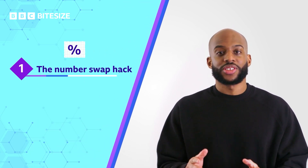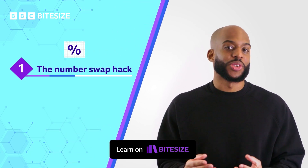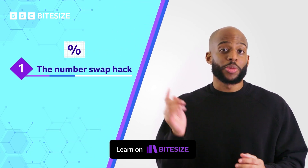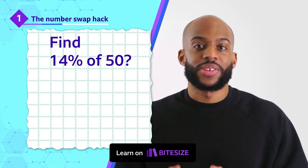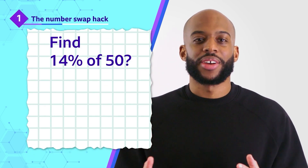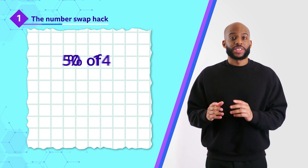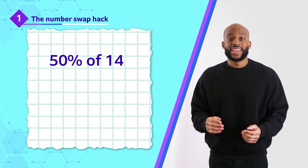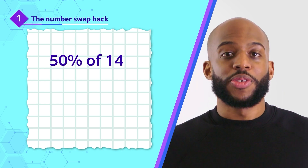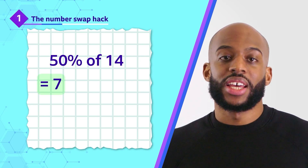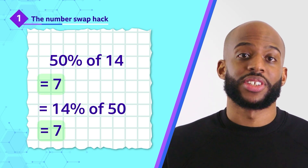Firstly, when asked to find a percentage of a number, here's a handy trick for you: swap the numbers around. So what's 14% of 50? It's tricky, right? But if you swap the numbers to work out 50% of 14, this will give you the same answer. 50% of 14 is 7, and 14% of 50 is also 7.